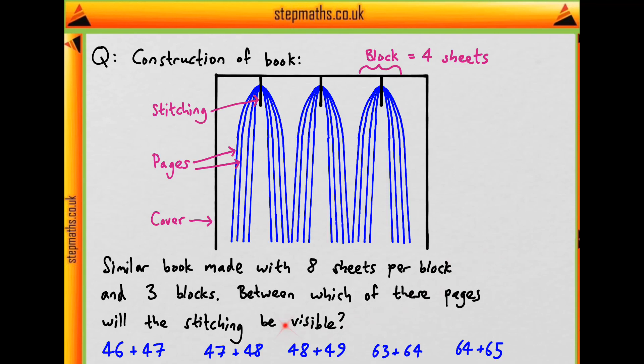And so if a similar book is made but with eight sheets per block rather than four, and still having three blocks, then between which of these pairs of pages will the stitching be visible? And these are our choices. In other words, which pages are in the middle of this block where we can see this black stitching?